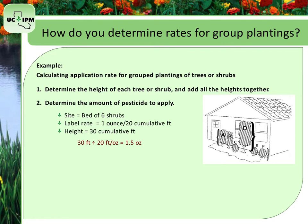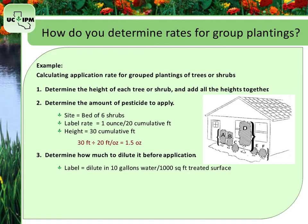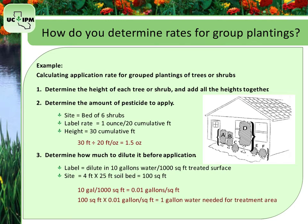After you have calculated the amount of product to use, determine how much to dilute it before application. Say the label tells you to dilute the pesticide in at least 10 gallons of water per 1,000 square feet of treated surface, and the shrubs are in a 4-foot by 25-foot soil bed, or 100 square foot area. 10 gallons per 1,000 square feet is equivalent to 0.01 gallons per square foot. Multiplying 100 square feet by 0.01 gallons per square foot equals 1 gallon of water, so you dilute 1.5 fluid ounces of pesticide in a minimum of 1 gallon of water.